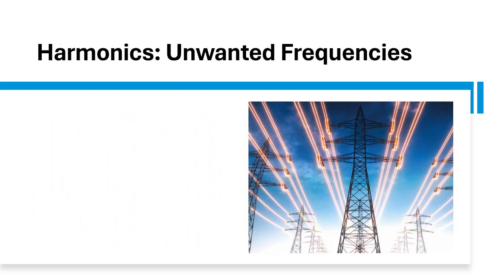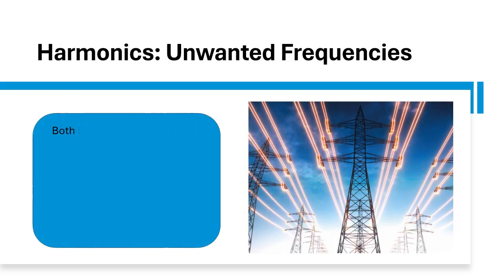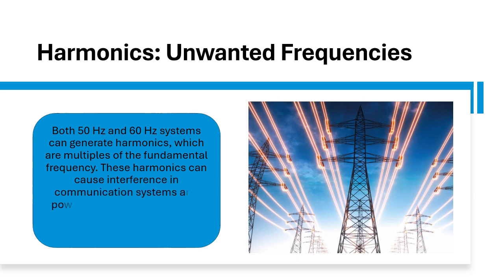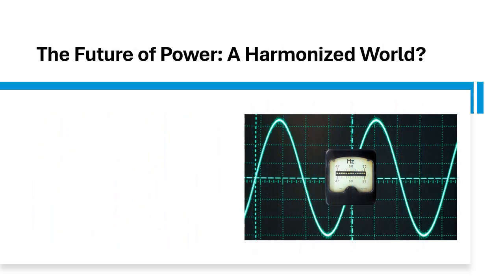Harmonics — unwanted frequencies. Both 50 Hz and 60 Hz systems can generate harmonics, which are multiples of the fundamental frequency. These harmonics can cause interference in communication systems and power quality issues. Effective filtering is essential to mitigate their impact.